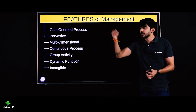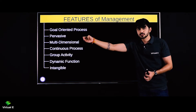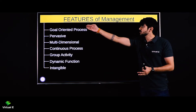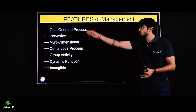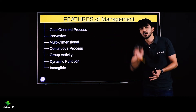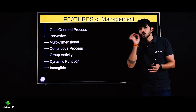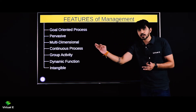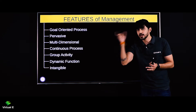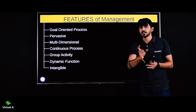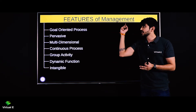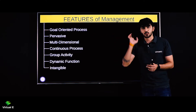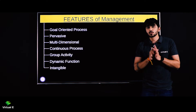Management ki definition yaad karo: getting things done by others. To koi kaam hai joh hume doosron se karana hai. The first feature is goal oriented process — that means management is always inclined towards getting things done. Koi kaam hai, koi goal hai, koi objective hai joh management ko achieve karna hai. So management is a goal oriented process.